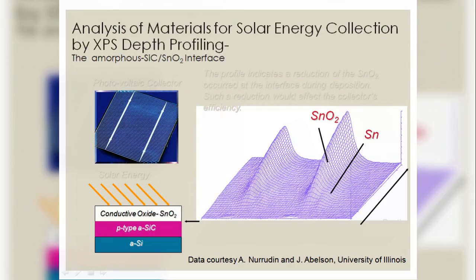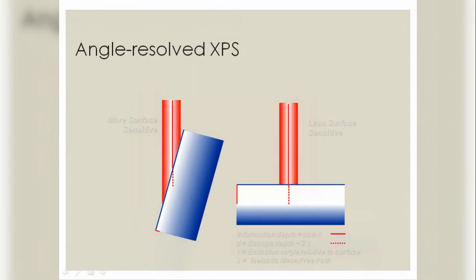Analysis of materials for solar energy collection by XPS depth profiling. Solar energy collection is used in making solar panels, which is now a very needed energy around the world and a greener fuel. The profile indicates the detection of SnO2 at the interface during deposition. Such a reduction would affect the collector's efficiency.